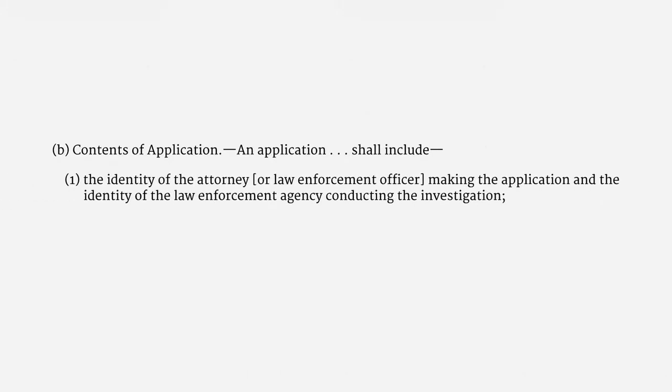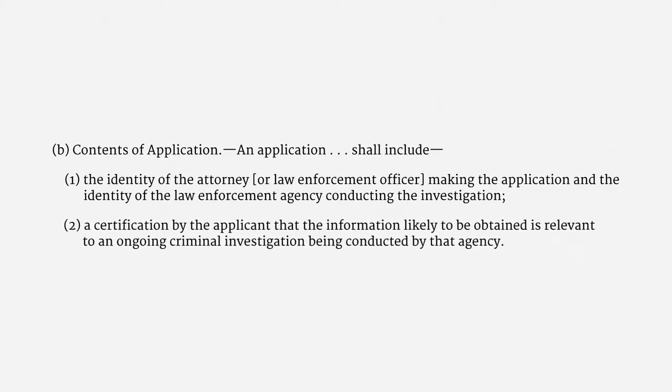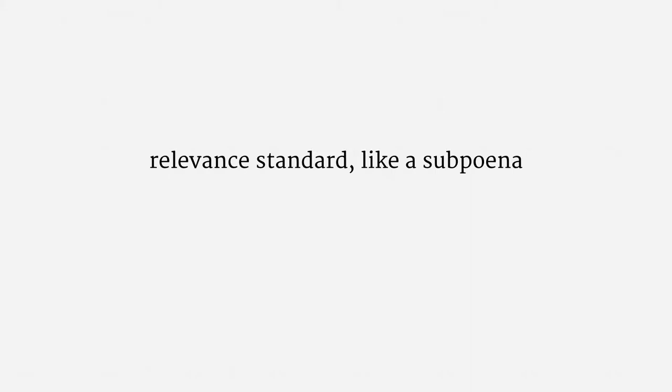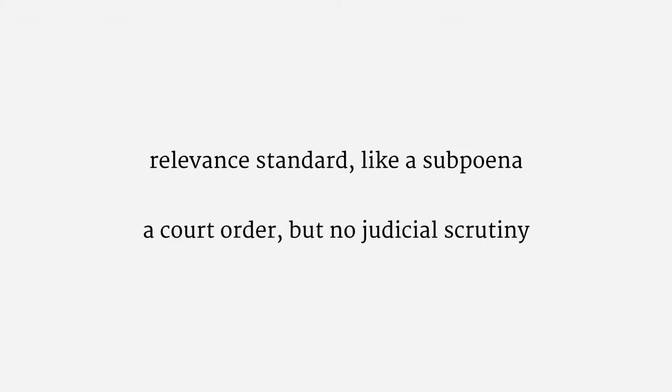One of the provisions of the Pen Register Act spells out what's required to apply for a pen trap order. The statute says that a pen trap application has to include the name of the government investigator and name of the investigating agency. It also has to include a certification that the pen trap information is relevant to an ongoing criminal investigation. The Pen Register Act imposes merely a relevance standard, like a subpoena for historical call records. While a pen trap order is a court order, it doesn't involve judicial scrutiny — the investigator self-certifies that the pen trap is relevant to an investigation. The court's role is purely administrative.